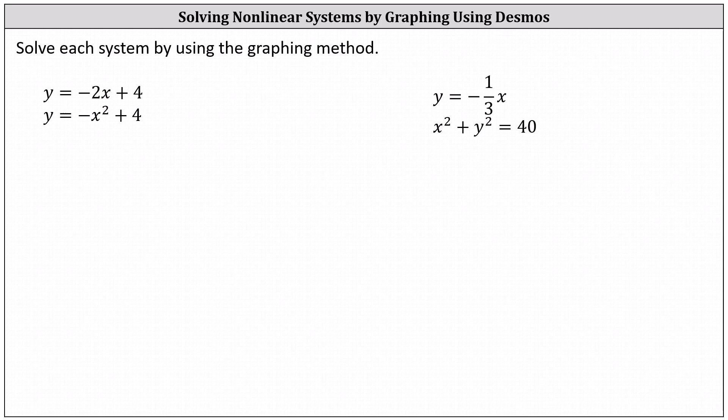Solve each system using the graphing method. To solve a system of two equations with two unknowns using the graphing method, we graph both equations on the coordinate plane and look for any points of intersection. The ordered pair for each point of intersection represents a solution to the system.